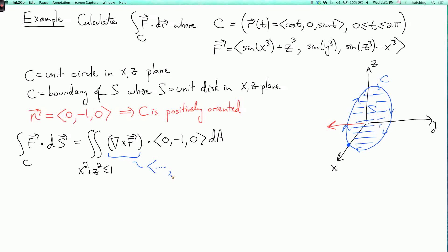So this is equal to something. I don't care what the x component is, because I'm dotting it with this vector whose only non-zero component is the y component. And the y component of the curl is d/dx of this minus d/dz of that.